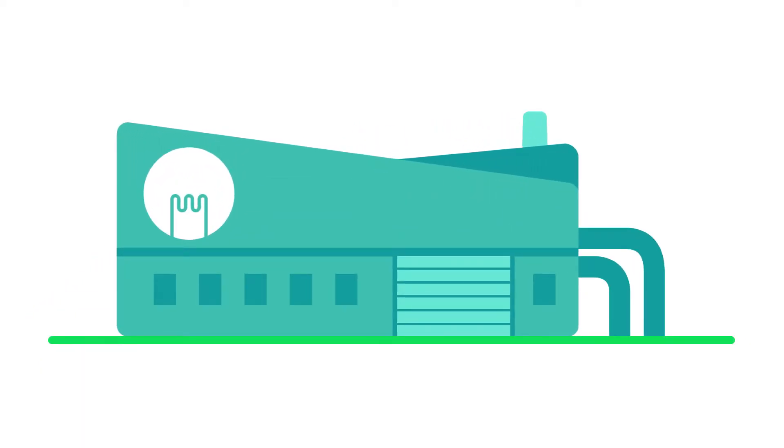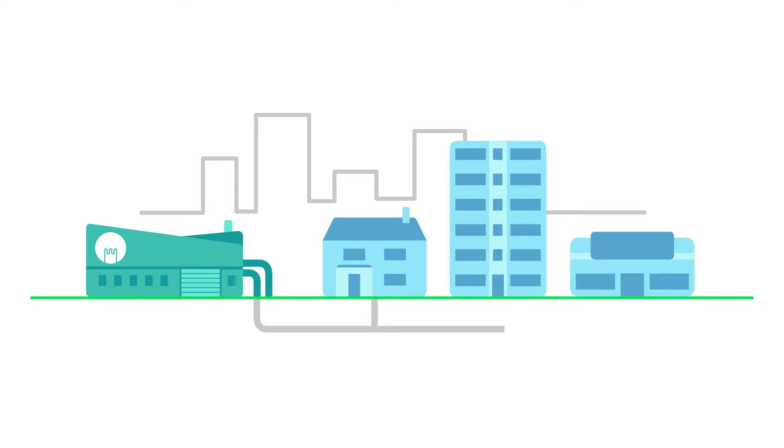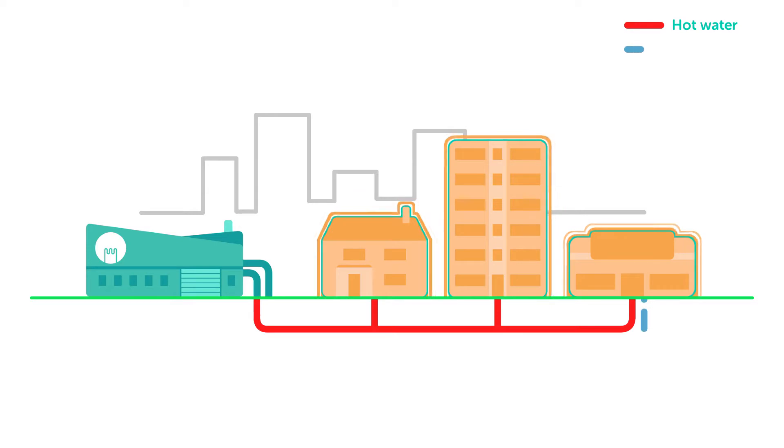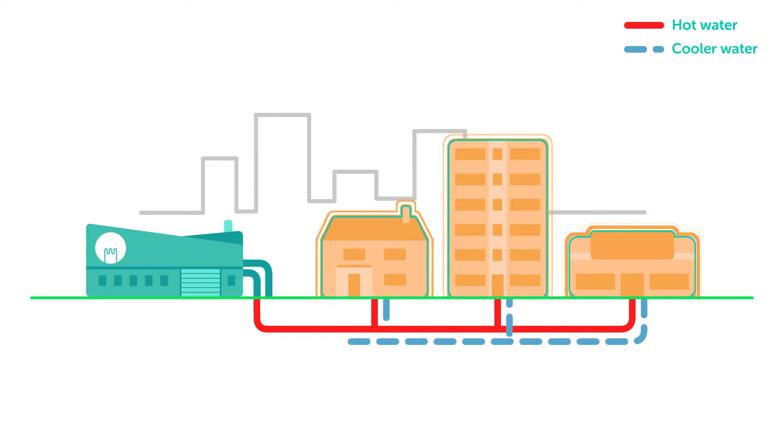The energy centres generate energy in the form of hot water, which is pumped through super insulated underground pipes into homes and businesses across Enfield. Once used, the cooler water that leaves each property goes back into the energy centre to be re-heated and used again.